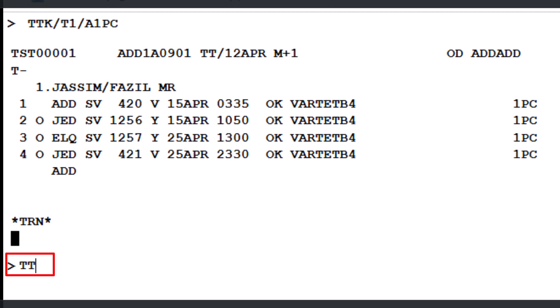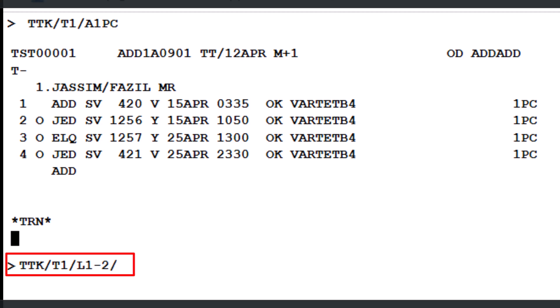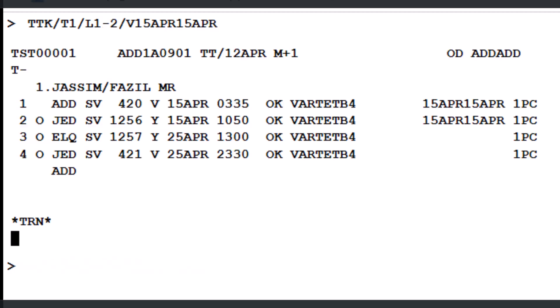Next, use the TTK transaction again, followed by a slash and the letter T with a number 1, indicating TST record number 1. Then, add another slash followed by the letter L and 1-2 to specify lines 1 through 2 of the TST. After that, include another slash, the letter V for the validity identifier, followed by the not valid before date and the not valid after date. Press Enter to proceed. Lines 1 and 2 of the TST are now updated with the specified validity dates.